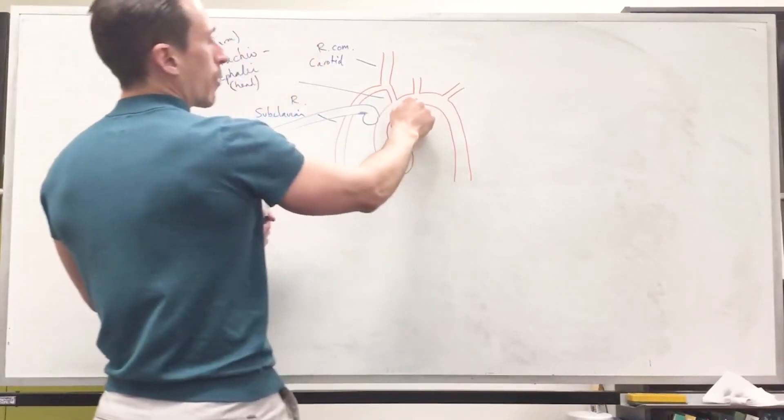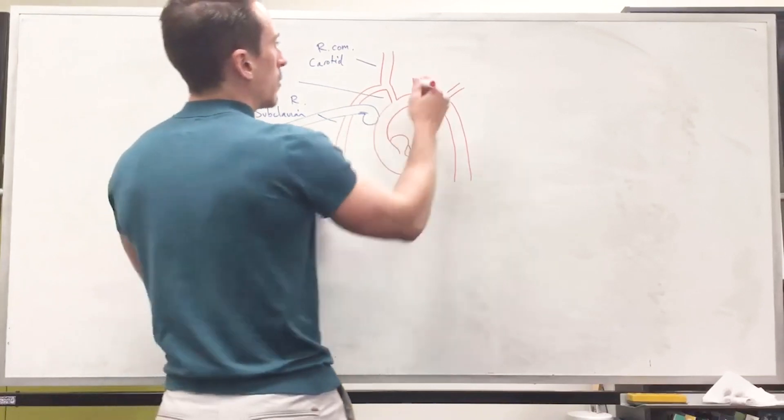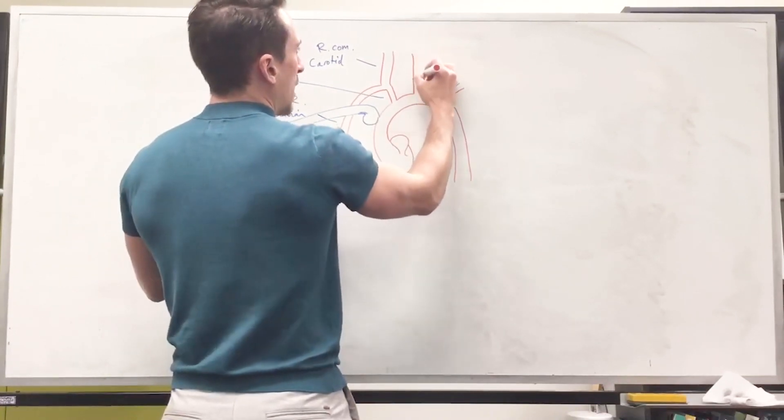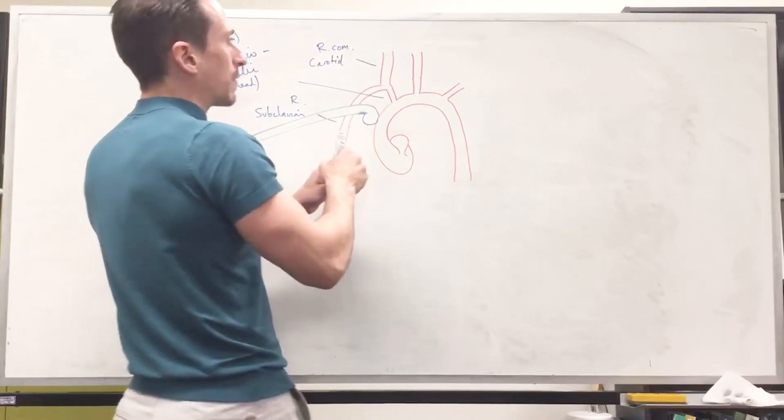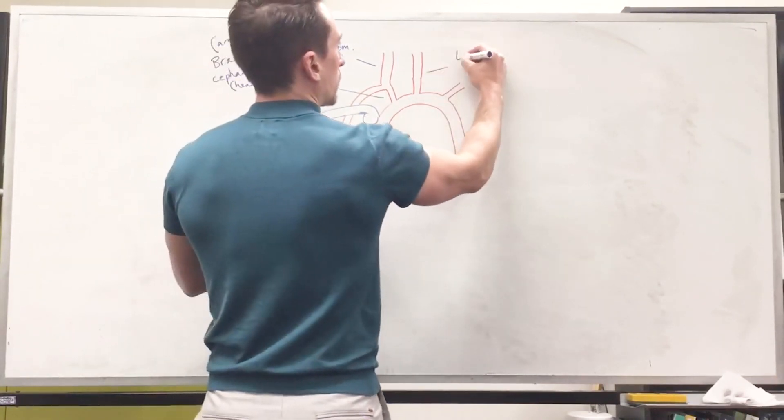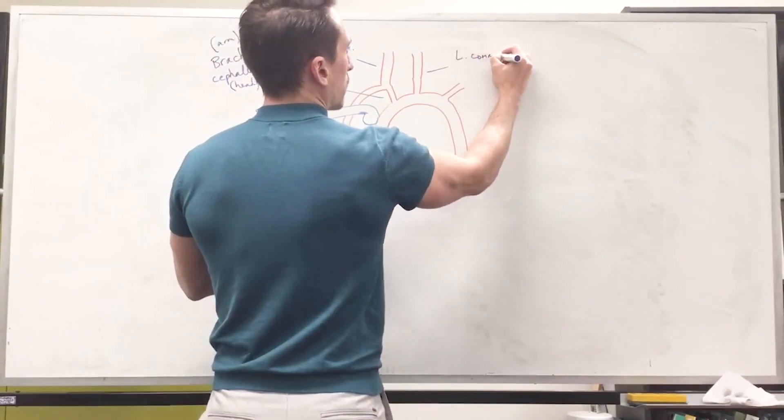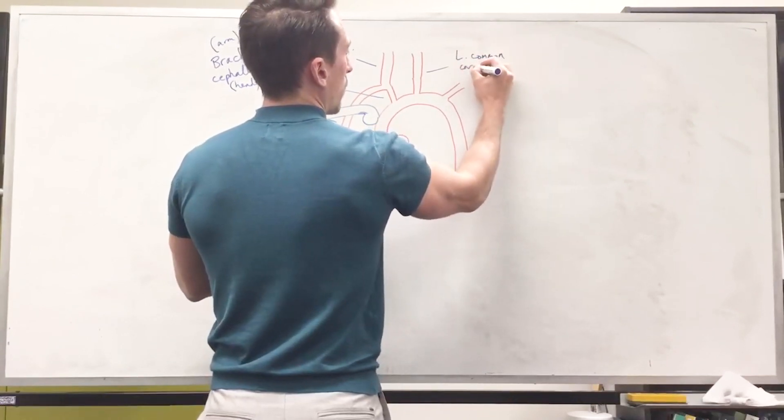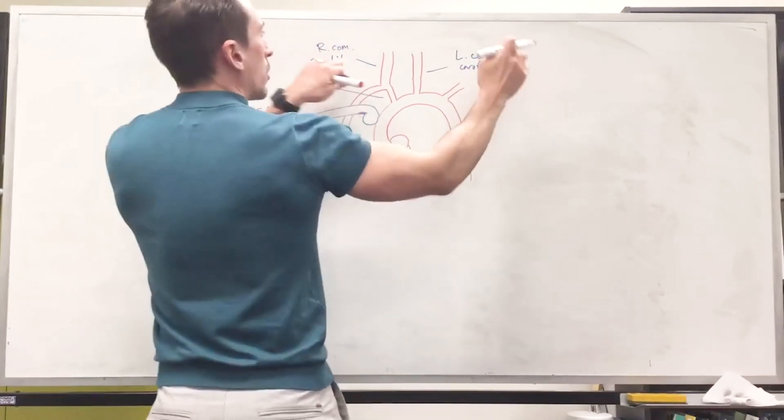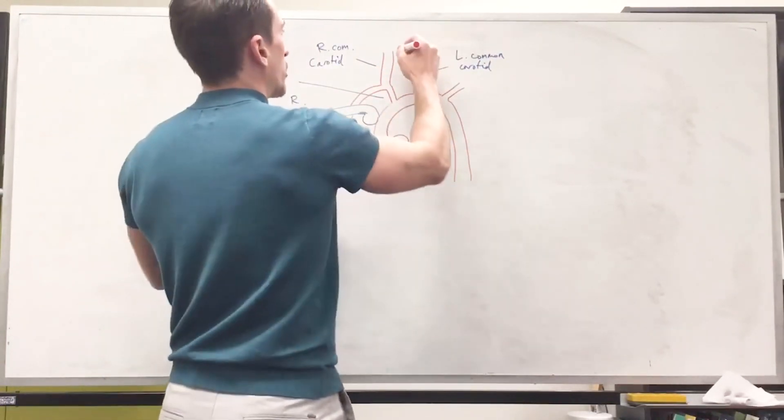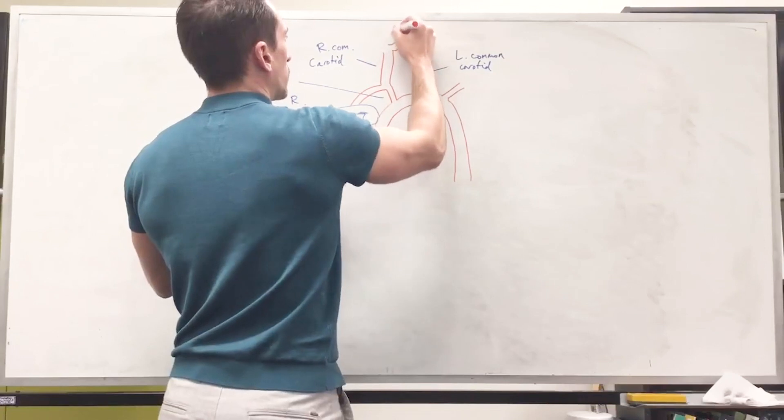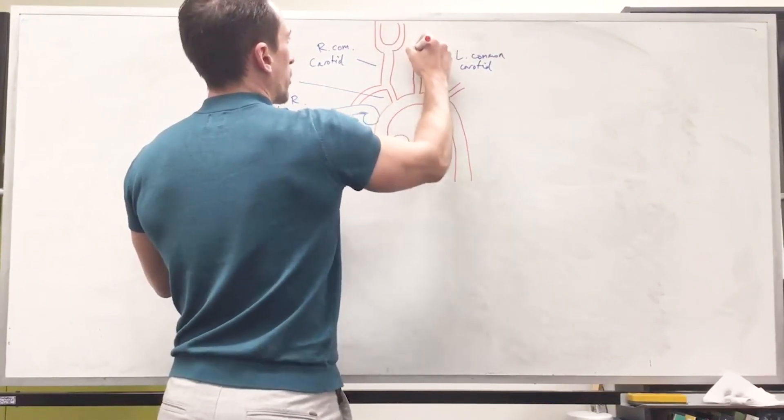we've got a branch of the aorta here, and this is going to be the left common carotid. So we've got the right common carotid there. We've got the left common carotid here, and because they're common carotids, they're going to branch off and give smaller branches, and these smaller branches include the internal and external carotids.